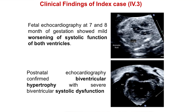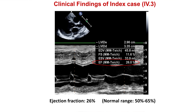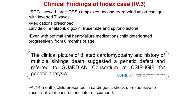Pedigree analysis found that the patient was born out of second-degree consanguinity. The couple consulted clinicians and certain clinical findings were carried out. During fetal echocardiography at 7 and 8 months of gestation, systolic function of both ventricles was found to be improper. Postnatal echocardiography confirmed biventricular hypertrophy with severe biventricular dysfunction. M-mode echocardiography showed an ejection fraction of around 26%, compared to the normal range of 50–65%. ECG abnormality showed large, complex changes with inverted T waves. The clinician prescribed Carvedilol, Enalapril, Digoxin, Frusemide, and Spironolactone. Even with medication, the child deteriorated progressively for 6 months and passed away at the age of 14 months.